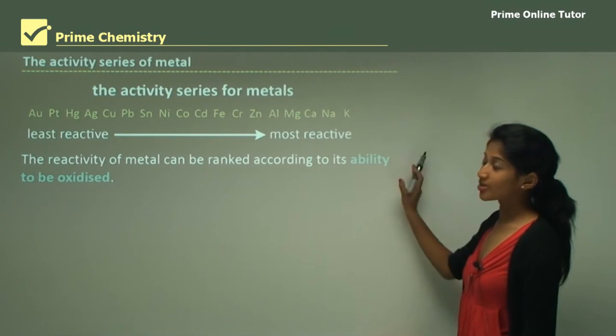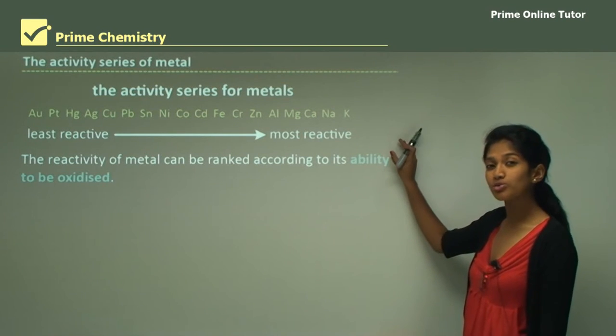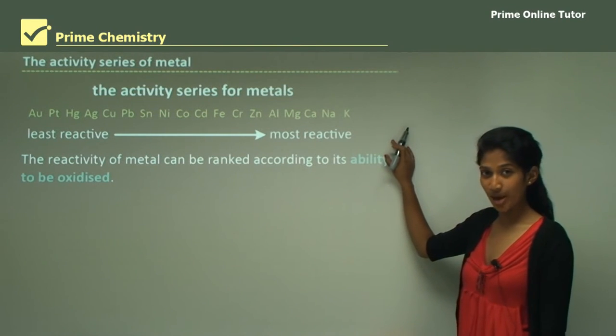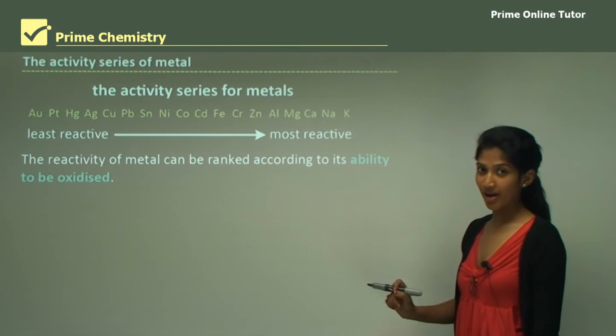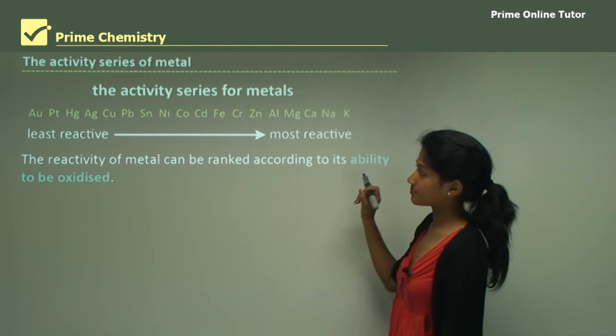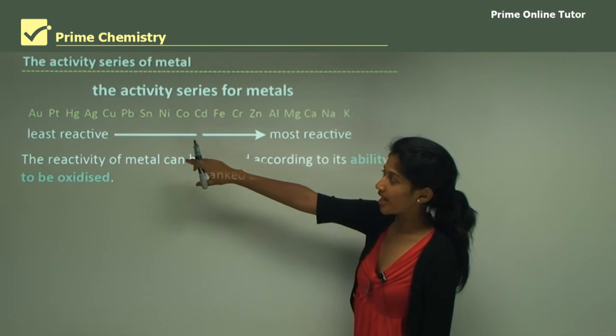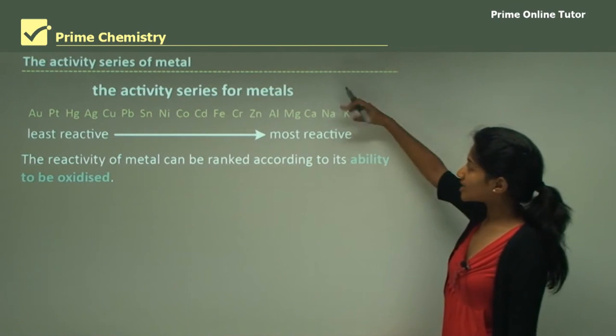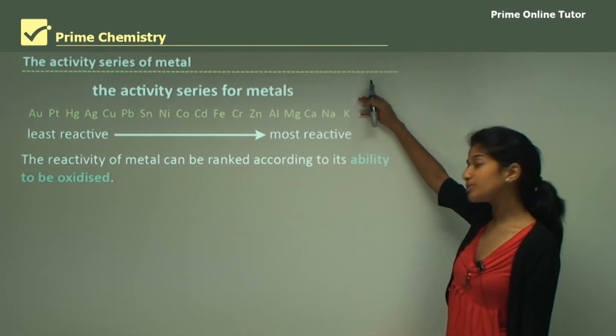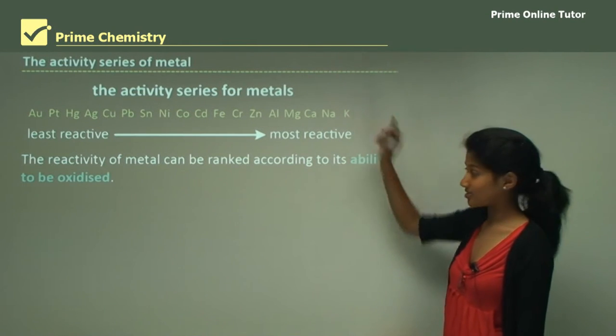Let's look at the activity series and you'll be able to find this in the back of your periodic table. It'll be vertical on the back of your periodic table even though it's horizontal here. We have the least reactive such as gold, platinum, mercury and here we have the most reactive such as potassium, sodium and calcium.